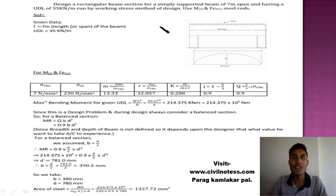We have some data: the length equals 7 meter which is the length of the span of the beam. UDL uniformly distributed load is 35 kilonewton per meter provided over the overall span. We have M20 grade of concrete and Fe415 steel.